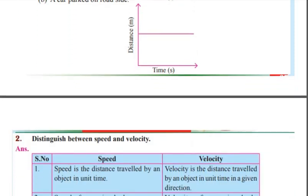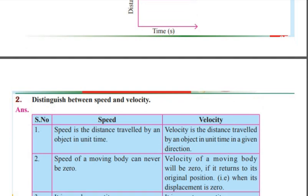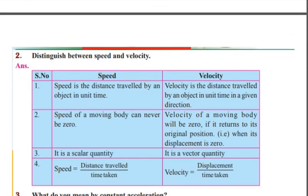Distinguish between speed and velocity. Speed is the distance traveled by an object in unit time. Velocity is the distance traveled by an object in unit time in a given direction.